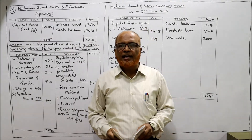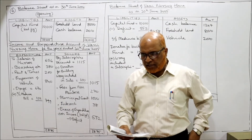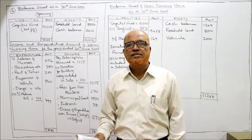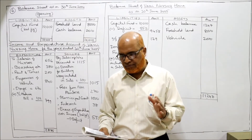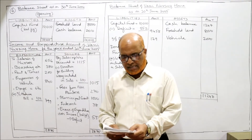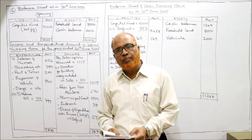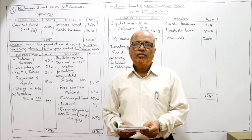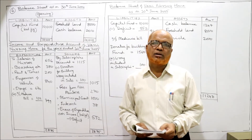Now we start problem number 6. The receipts and payments account of Vani Nursing Home is given for the year ended 30th June 2005. On the debit side: opening cash balance 2,010; subscription (revenue income); fees from non-members (revenue income); municipal grant (revenue income); donation for building fund — this is a specific donation, so it goes to the balance sheet liability side; interest (revenue income).